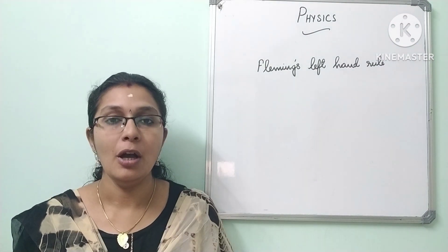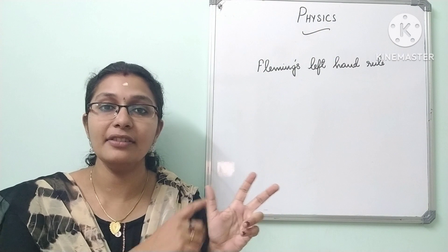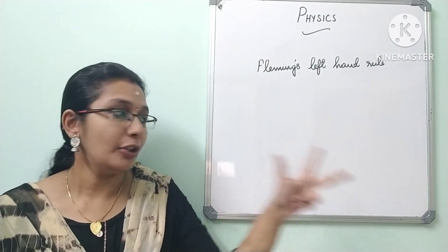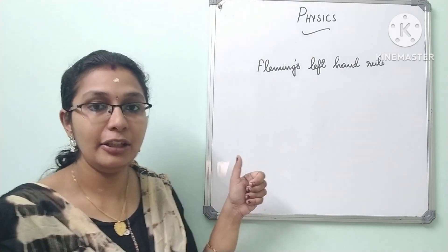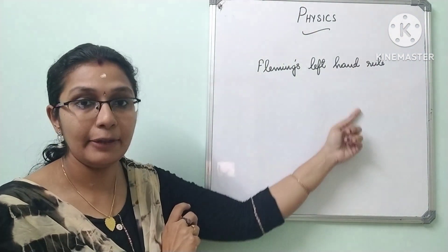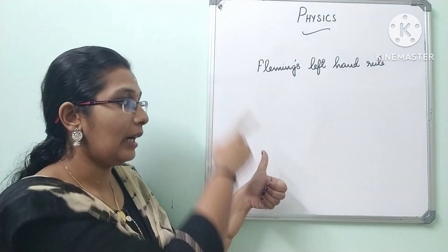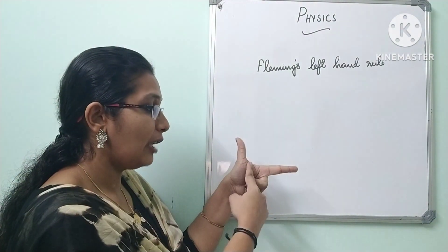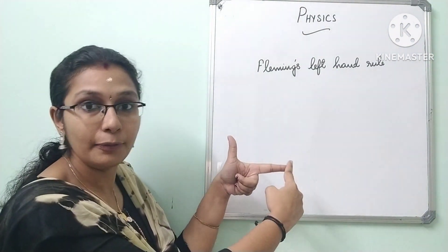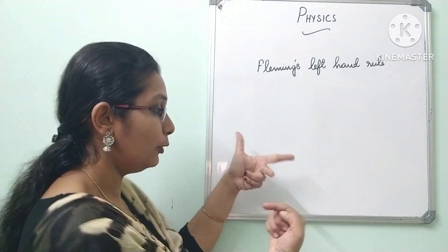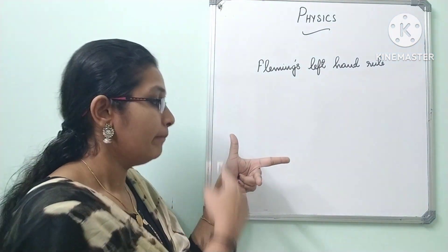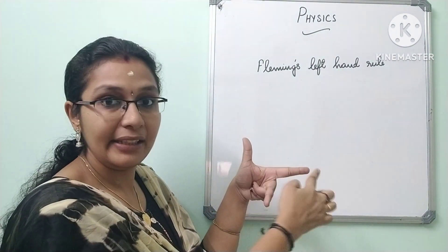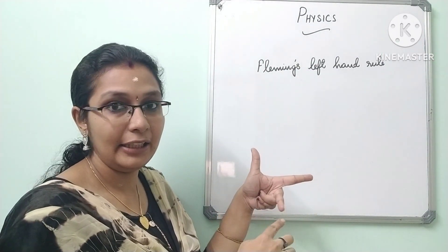Now let us understand the rule. First, stretch the first three fingers of your left hand in mutually perpendicular directions. The thumb should point upwards, the forefinger or pointer finger should point outward to the side, and the middle finger should point towards you. You can see a 90-degree angle between the thumb and forefinger. If you consider any two of these three fingers, they are at 90 degrees to each other — they are mutually perpendicular to each other.